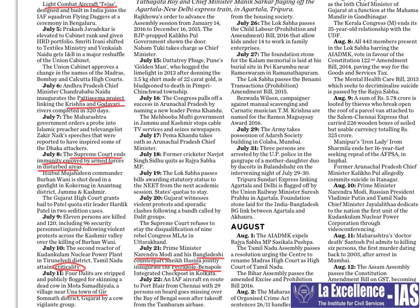On July 26th, the Child Labour Bill was introduced and is under serious consideration. As with other bills, note the three key points. One loophole here is allowing children under 14 to work in family enterprises — this was a loophole in the previous act and it continues here as well. These two points are important.